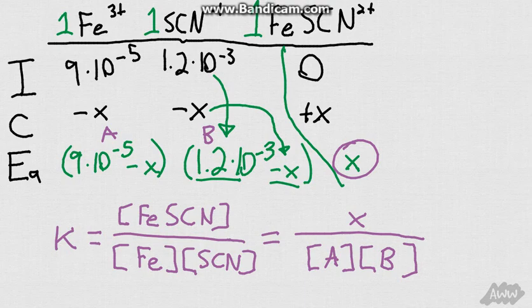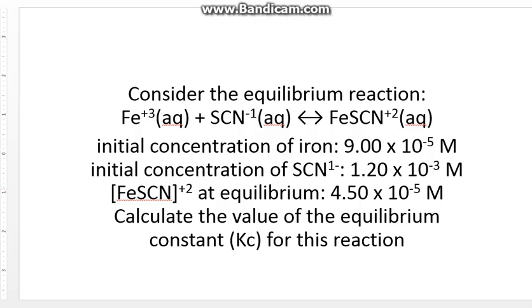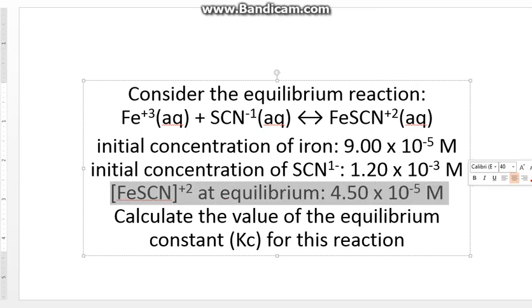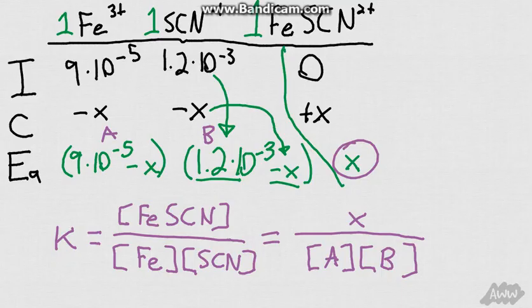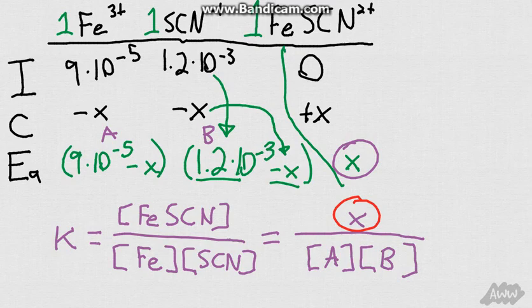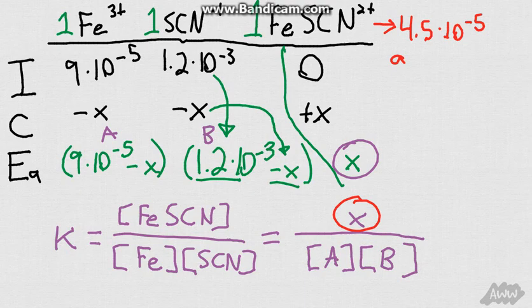Now how can we tell what any of these variables are? Well, we do know that at equilibrium, we have our concentration of FeSCN, which if we go back to our ICE table, is x. So, we can essentially replace all of our x's with 4.5 times 10 to the negative 5th.